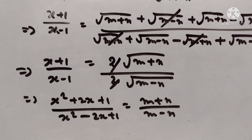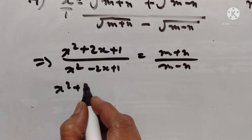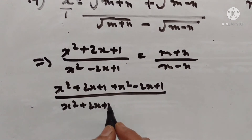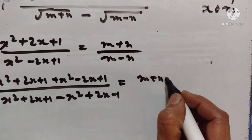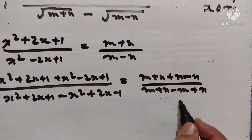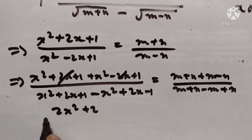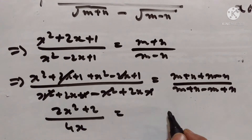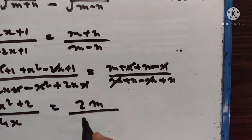Again componendo and dividendo: this plus this upon this minus this. So x squared plus 2x plus 1 plus x squared minus 2x plus 1 upon x squared plus 2x plus 1 minus x squared plus 2x minus 1 is equal to m plus n plus m minus n upon m plus n minus m plus n. The 2x terms go off, 1 minus 1 goes off, n minus n goes off on the right side.